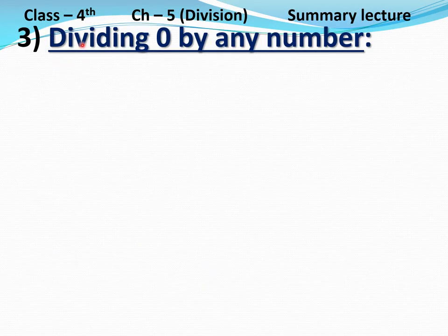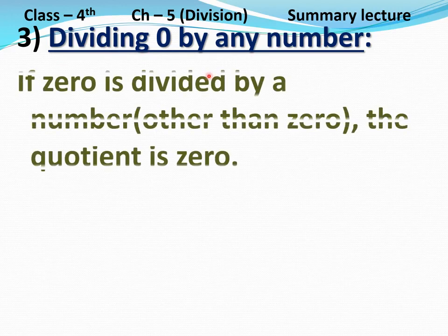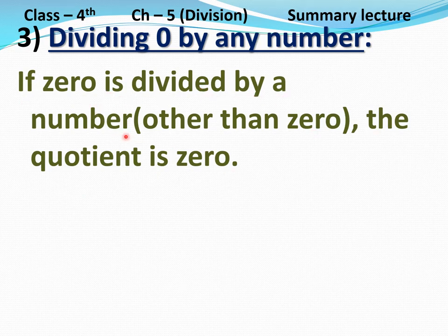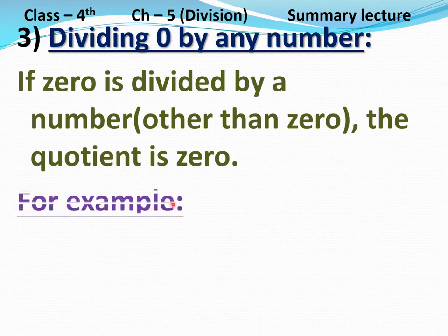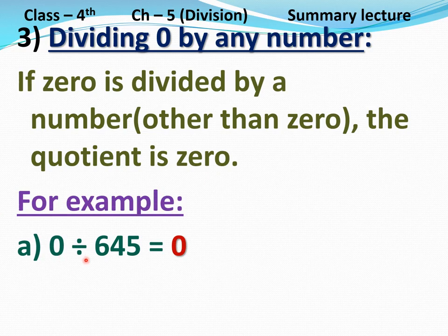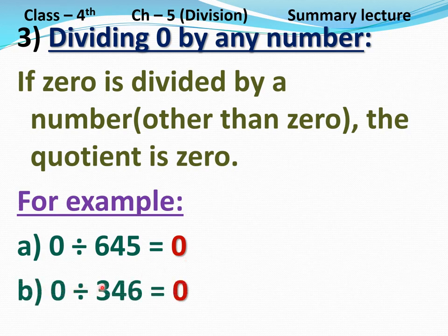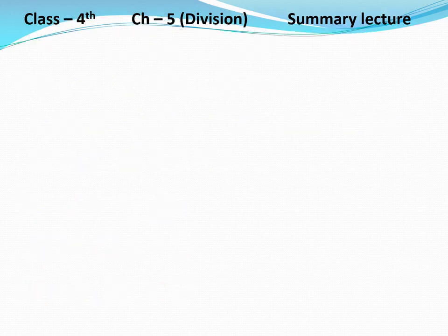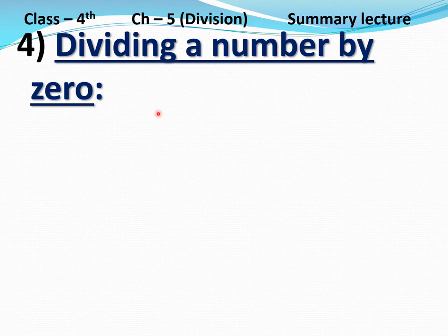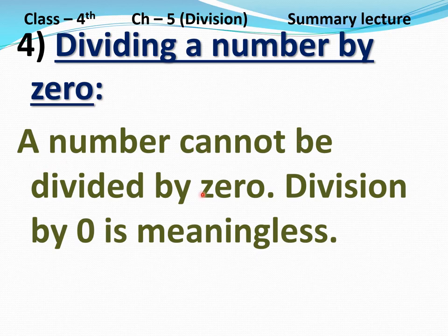Property number 3: Dividing 0 by any number. If 0 is divided by a number other than 0, the quotient is 0. For example, part A: 0 divided by 645 equals 0. Part B: 0 divided by 346 equals 0. Property number 4: Dividing a number by 0. A number cannot be divided by 0. Division by 0 is meaningless.